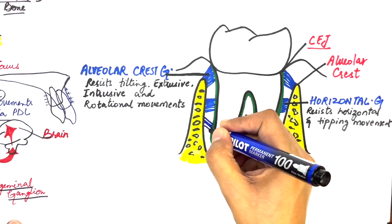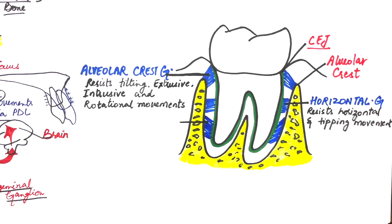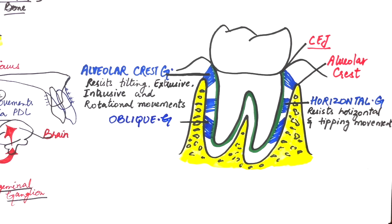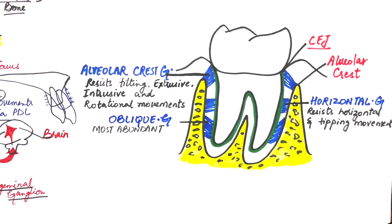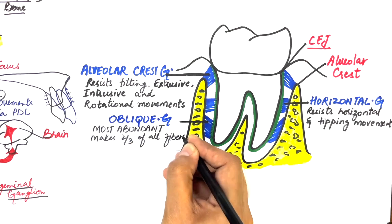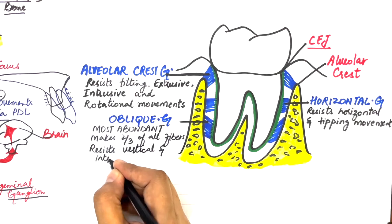The oblique group is the most abundant of all groups and makes up about two-thirds of the PDL fibers. They are located at the middle third of the root and run obliquely from the root to the alveolar bone. These fibers resist vertical and intrusive forces.